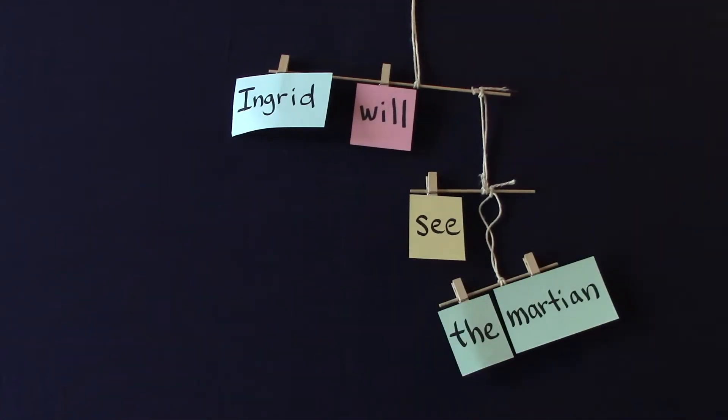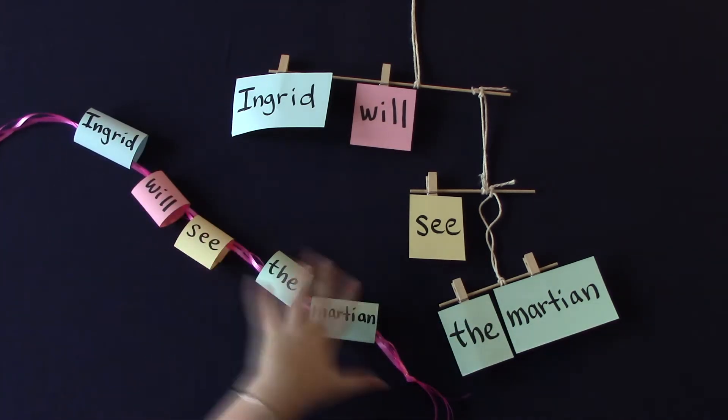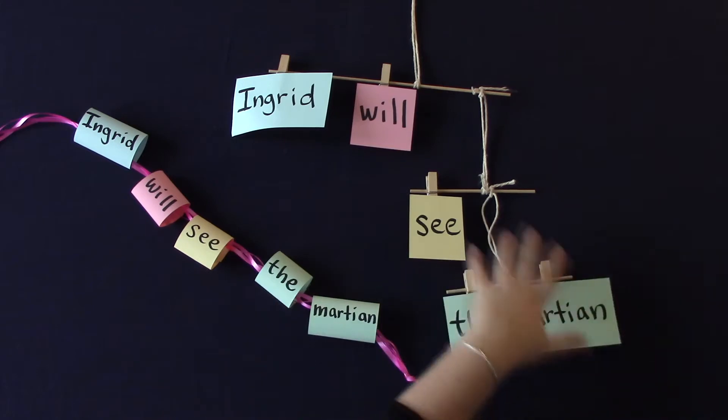The bracelet model means that each bead or word only comes in contact with the beads or words next to it, whereas in a mobile, the words are put together in subgroups.